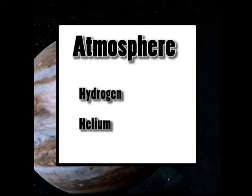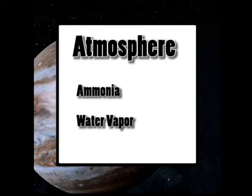Now what about Jupiter's atmosphere? Well it's mainly composed of hydrogen and helium, and also contains a little bit of ammonia and water vapor.